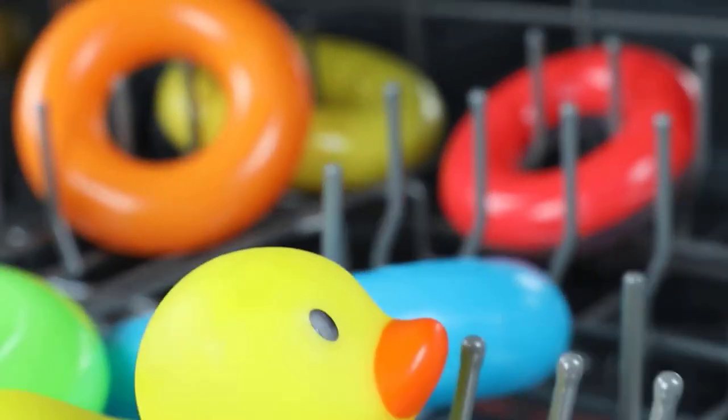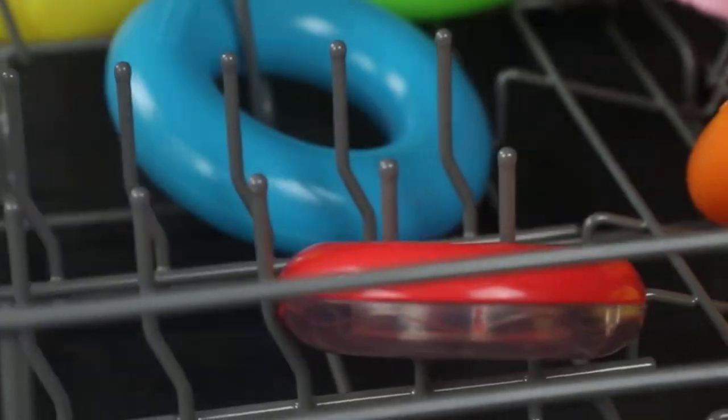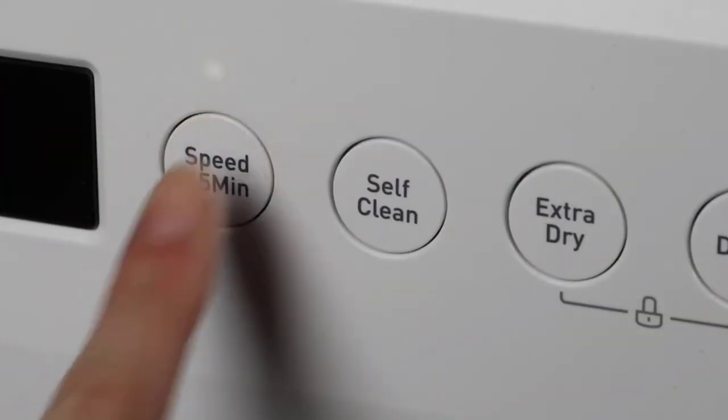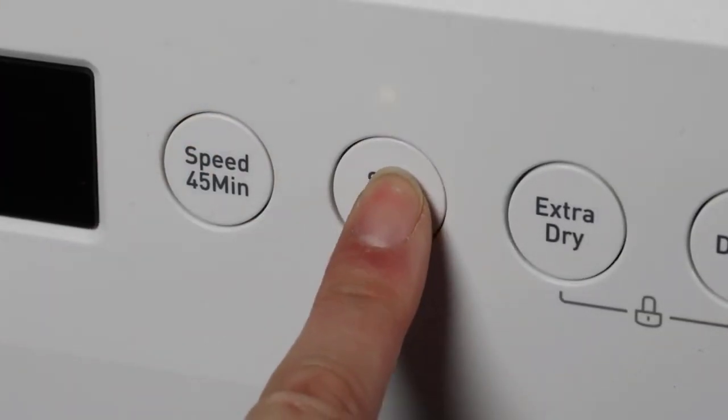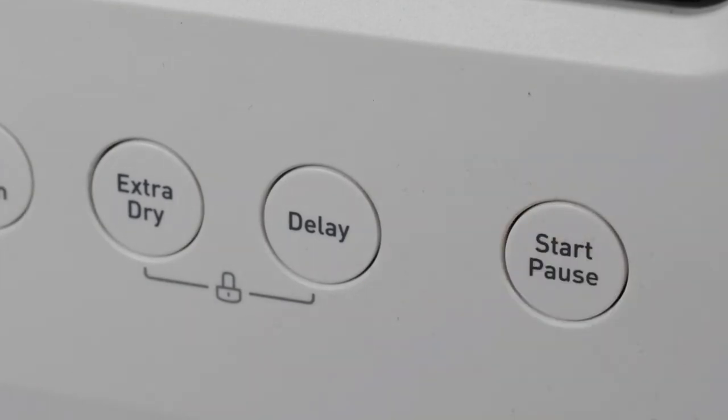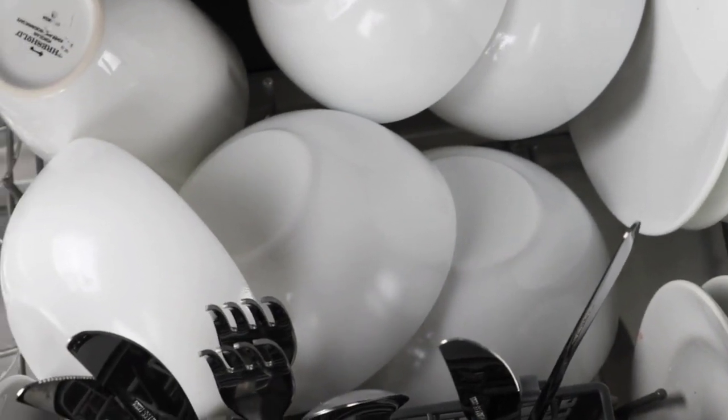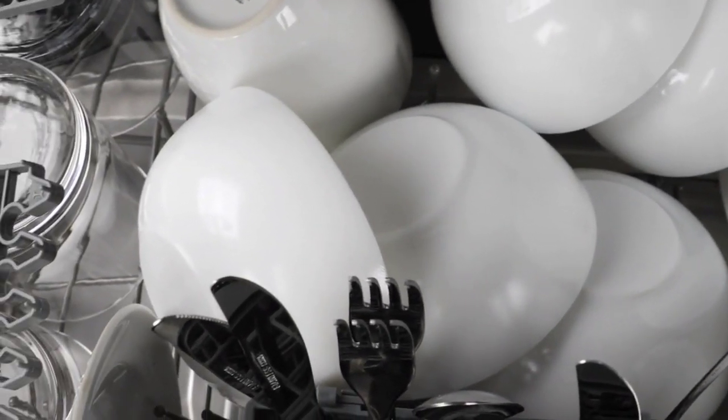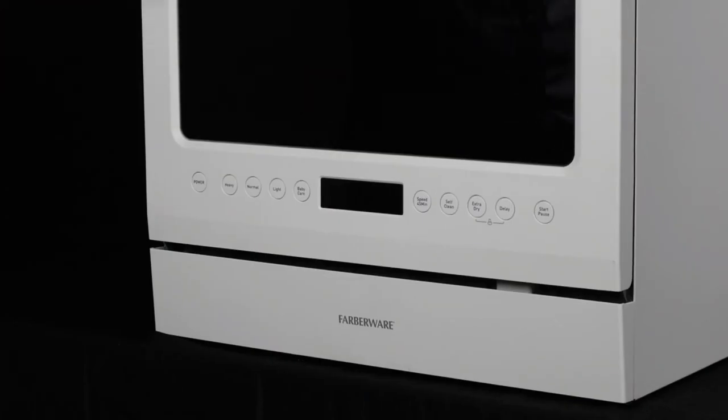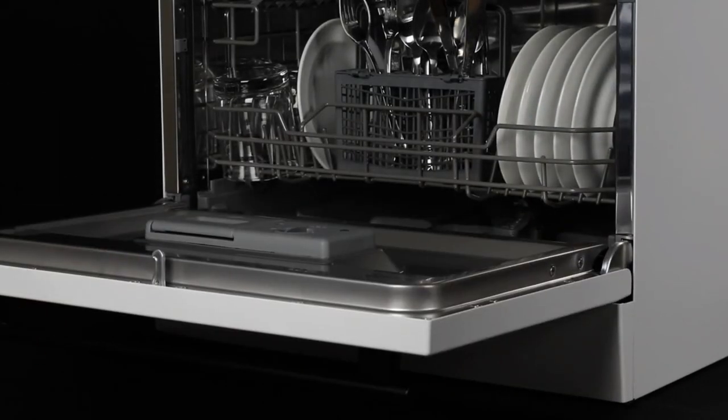For those who are concerned about safety, the Farberware Countertop Dishwasher comes equipped with a child lock option that locks the control panel to prevent accidental starting by children. The durable stainless steel heavy-duty interior tub is also designed to stand up to everyday use and provide years of reliable service. Overall, the Farberware Countertop Dishwasher is an exceptional appliance that offers many useful features in a compact and efficient design.